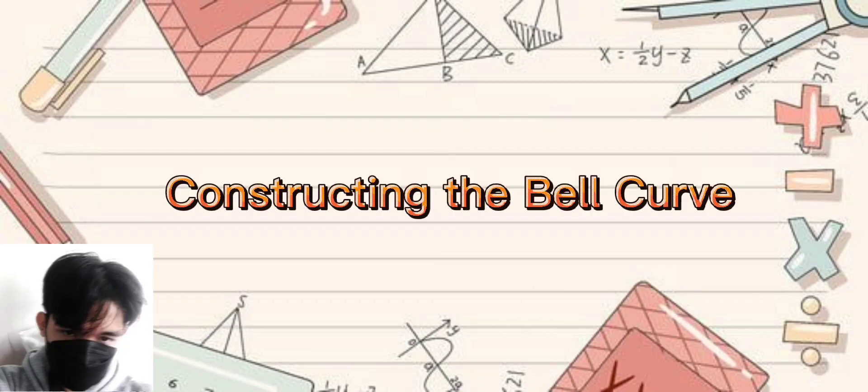Now, let's proceed on constructing the bell curve. For any population, the mean and the standard deviation are fixed. Thus, the Z formula matches the Z values, one to one, with the X values. That is for every X value, there corresponds a Z value and for each Z value, there is exactly one X value.